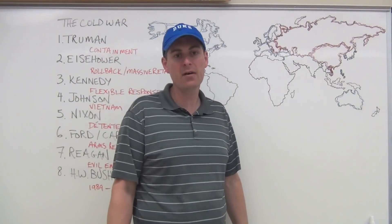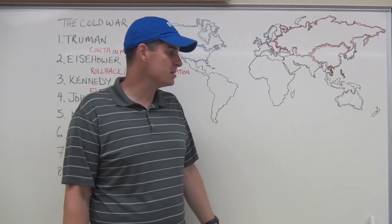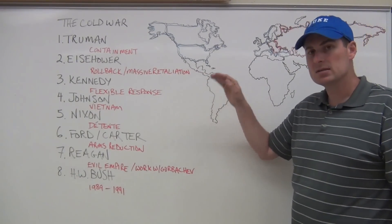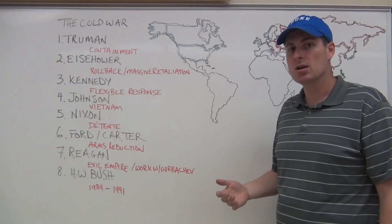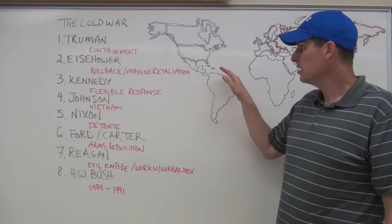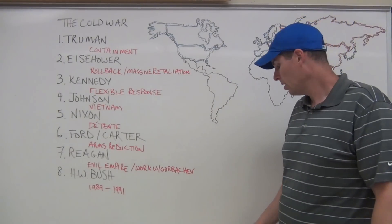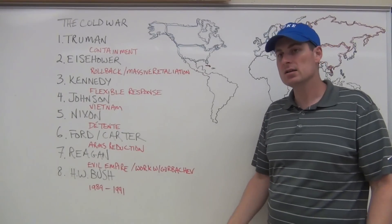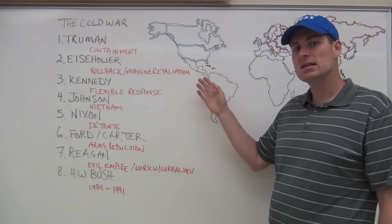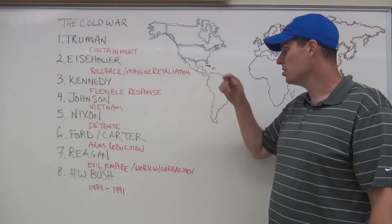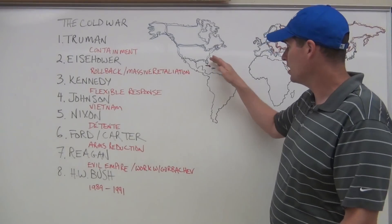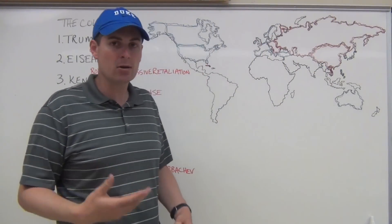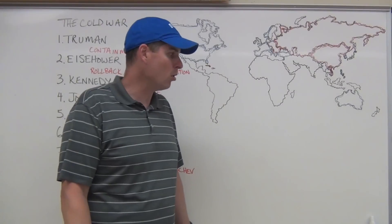There is speculation Kennedy might have pulled out of Vietnam had he lived, but nothing conclusive. Around Cuba, Kennedy has the Bay of Pigs — using Cuban expatriates to try to take over Cuba — which completely flops. Shortly after, you have the Cuban Missile Crisis, where the U.S. detects that Soviets are placing nuclear-tipped missiles in Cuba very close to the Florida coastline. Kennedy puts a naval quarantine around Cuba, and eventually the Soviet ships turn around. The world takes a deep breath at the closest it ever gets to the brink of a worldwide nuclear war.